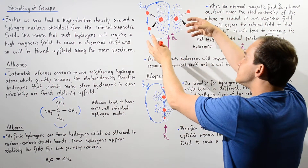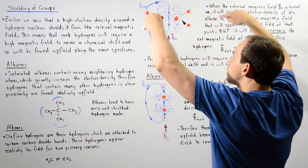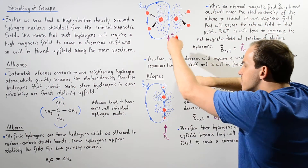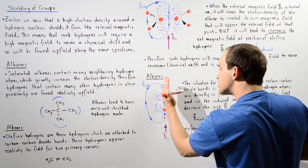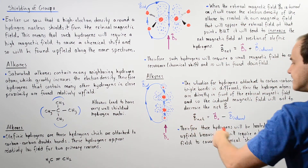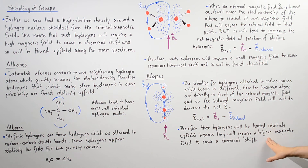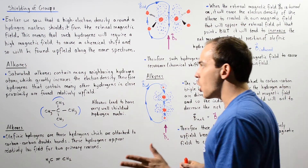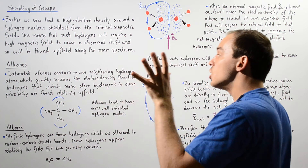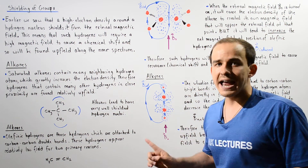The situation for hydrogens attached to carbon-carbon triple bonds is different than in the alkene case. In the alkene case, the hydrogen atoms are found coming out of or going into the board — not along the axis. But here in alkynes, they lie along the same vertical axis as the external field, so as the external field goes up, the induced field goes down and the net is a smaller magnetic field. Therefore these hydrogens are located relatively upfield because they require a higher magnetic field to cause the chemical shift — we have a shielding effect. To summarize: alkanes create a shielding effect, alkenes create a de-shielding effect, and alkynes create a shielding effect.